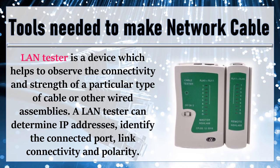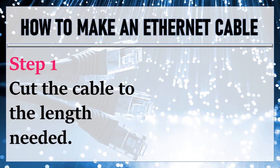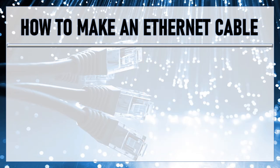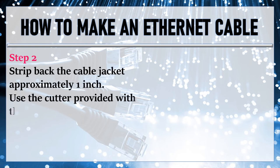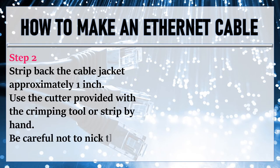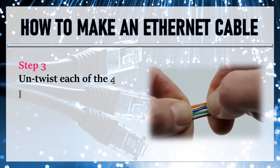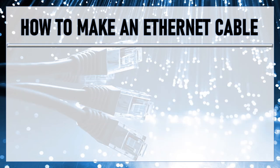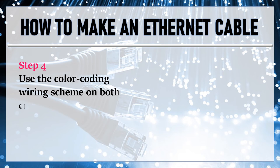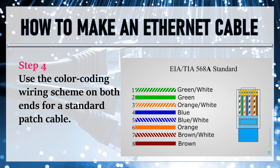I will now demonstrate the different steps on how to make an Ethernet cable. Step 1: Cut the cable to the length needed. Step 2: Strip back the cable jacket approximately 1 inch, using the cutter provided with the crimping tool or strip by hand. Be careful not to nick the individual wires. Step 3: Untwist each of the four pairs and straighten each wire as much as possible between the fingers. Step 4: Use the color coding wiring scheme on both ends for a standard patch cable. You can use the 568A or 568B color coding scheme.